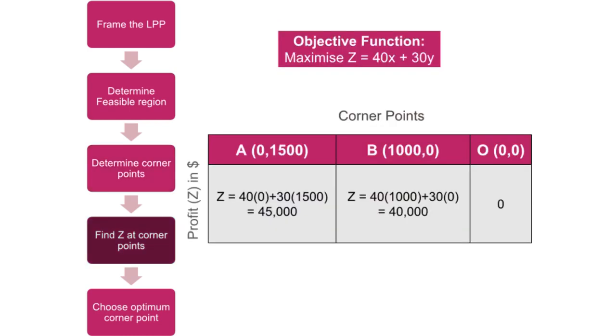Next, we calculate Z at the corner points which comes to be 0 for point O, $40,000 for point B, and $45,000 for point A.